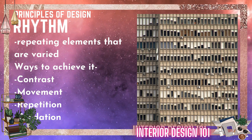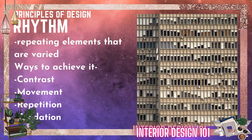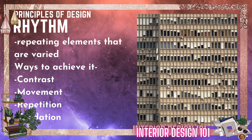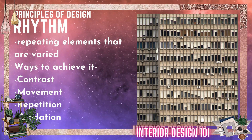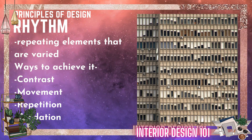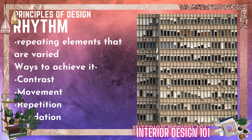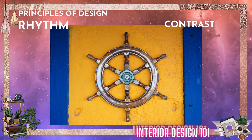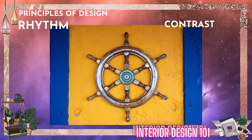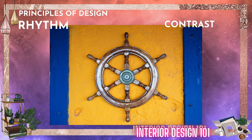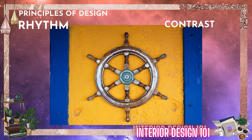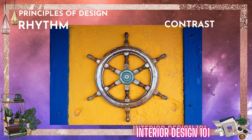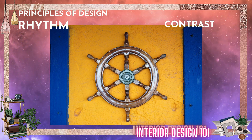Creating rhythm is about repeating objects — the same movement is created. It helps a viewer to move from point A to point B. There are different ways to achieve it: Contrast, movement, repetition, or gradation. Contrast means exact opposite colors in the color wheel, like black and white, or contrast in shapes like circle and square. Contrast brings life to a space — just don't overdo it.